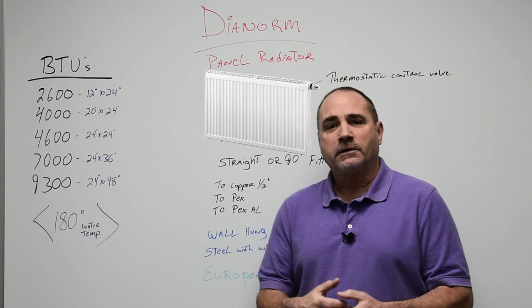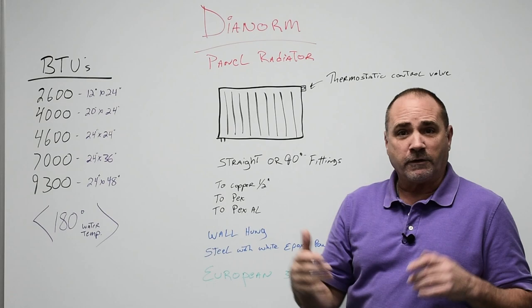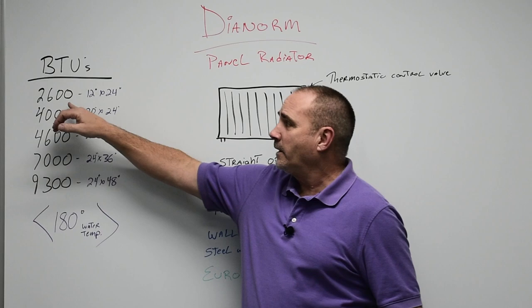You can go through the guide and choose your panel radiator by size and dimensions. The smallest is 12 inches tall by 24 inches wide, all the way up to 24 inches tall by 4 feet wide, or you can go by the BTUs it emits.